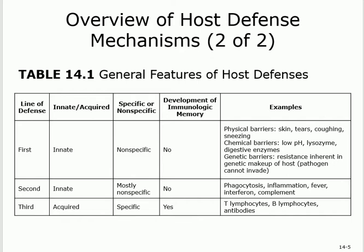The first line consists of physical barriers, chemical barriers, and genetic barriers. Physical barriers include skin, tears, coughing, and sneezing. What's the difference between coughing and sneezing? Both are expelling things trying to enter, but sneezing is upper respiratory and coughing is lower respiratory. If something irritates your upper respiratory tract, you sneeze; lower respiratory tract, you cough. In both cases, you are getting rid of something entering your respiratory system.